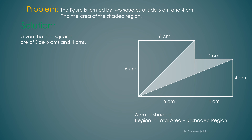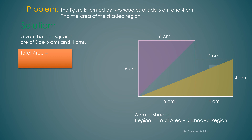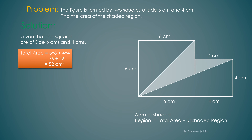To find the total area, we add the area of one square with the area of the other square: 6 times 6 plus 4 times 4, which gives us 52 centimeters squared.